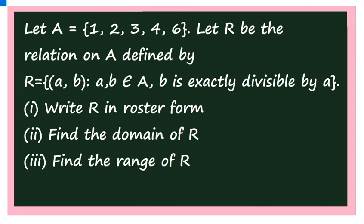Now take this question. Let A = {1, 2, 3, 4, 6}. Let R be the relation on A — that is, relation from A to A — defined by R = {(a, b) given that a, b ∈ A, where b is exactly divisible by a}. You have to write such elements where b is exactly divisible by a. Write R in roster form, find the domain of R, and find the range of R.